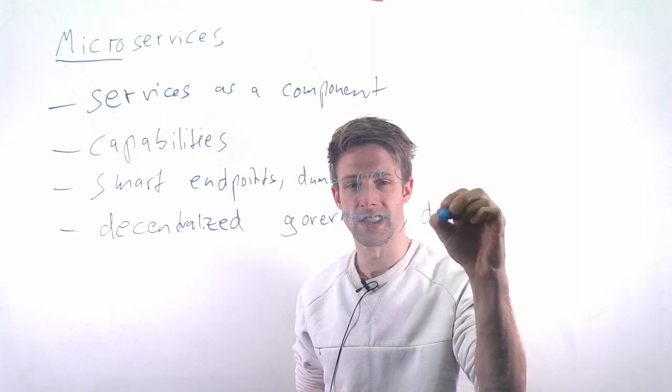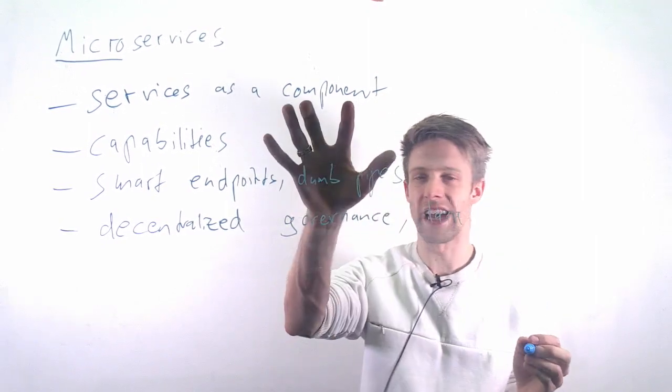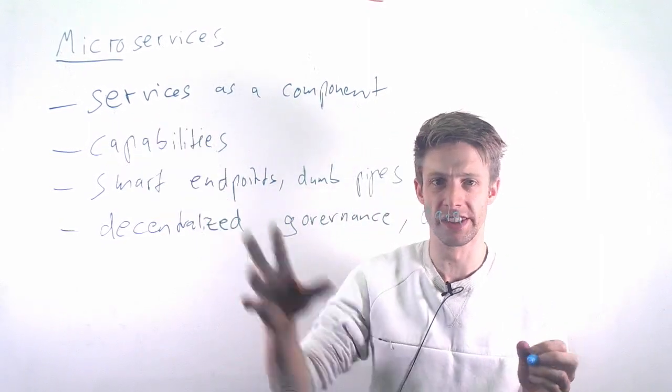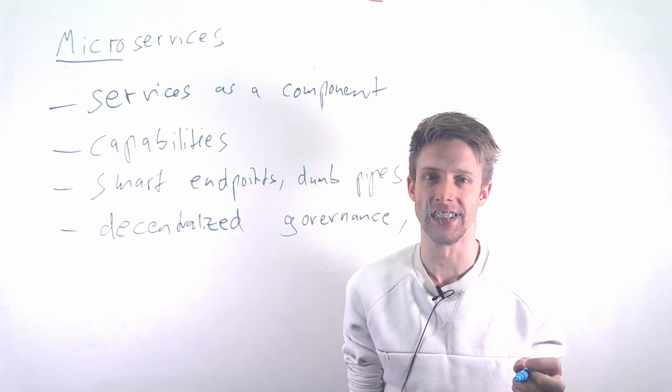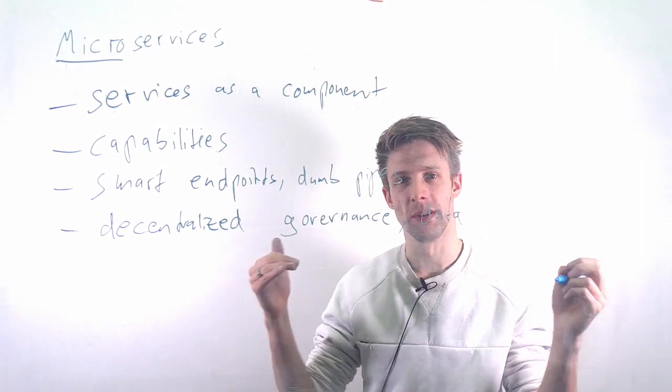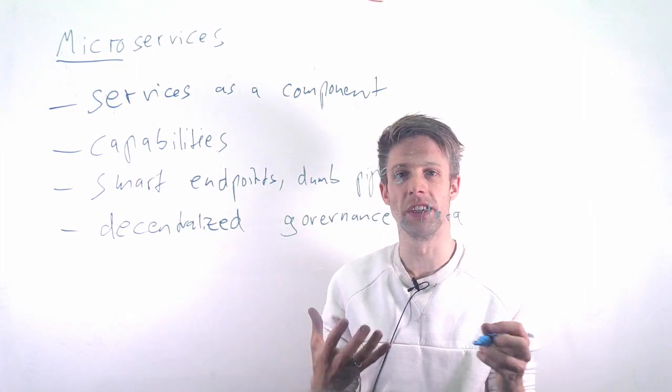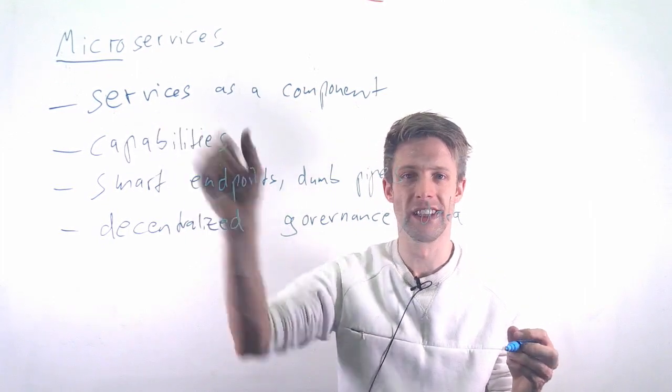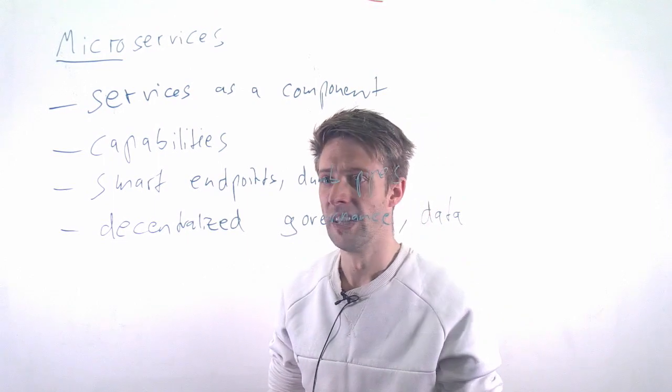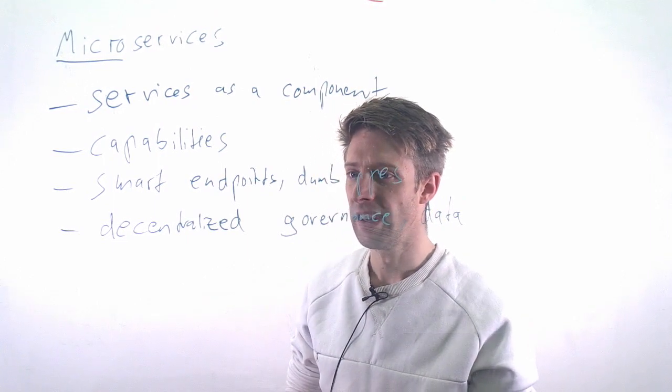And the other thing is decentralized data. So ideally every component, every microservice should have its own data, that you don't suddenly run into the problems that everyone is accessing the same database. Because then you have to agree for example on how does the data look like. So that's one issue.